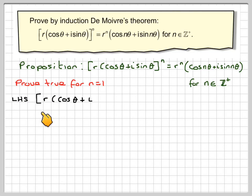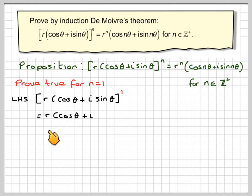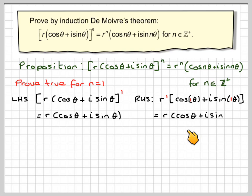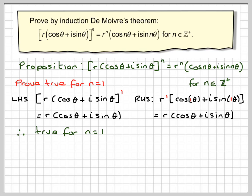The left-hand side will become r(cos θ + i sin θ) all to the power of 1, which we can see is r(cos θ + i sin θ). The right-hand side will be r to the 1, cos(1·θ) + i sin(1·θ), which again is r(cos θ + i sin θ). These two are the same, therefore it's true for n equals 1.